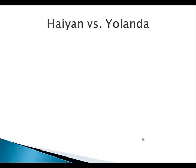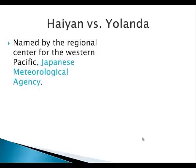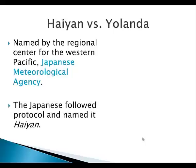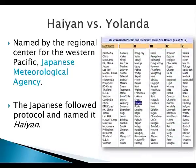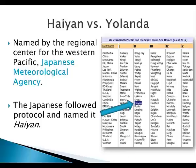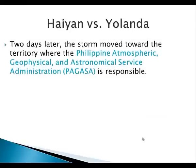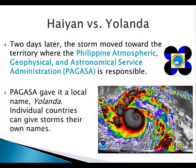Now let's talk a little about Haiyan versus Yolanda. Haiyan was the name given by the regional center for the western Pacific, the Japanese Meteorological Agency. The Japanese followed protocol and named it Haiyan as soon as it gained its tropical characteristics, based on its five lists of rotating names. However, as the storm developed and moved closer to the Philippines, the Philippine Atmospheric Geophysical and Astronomical Service becomes responsible.